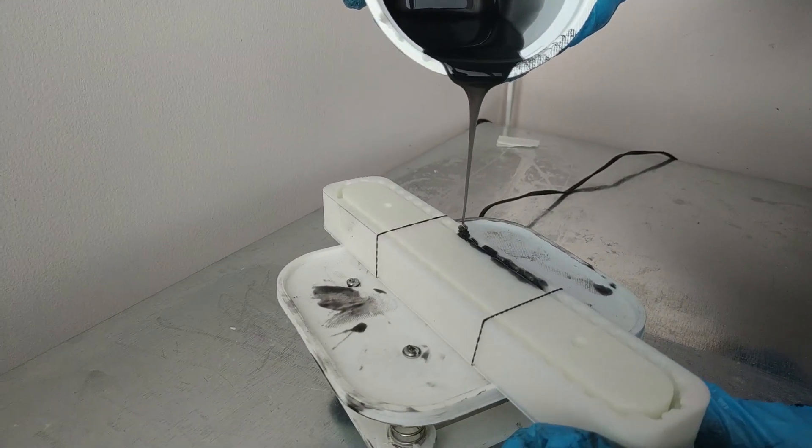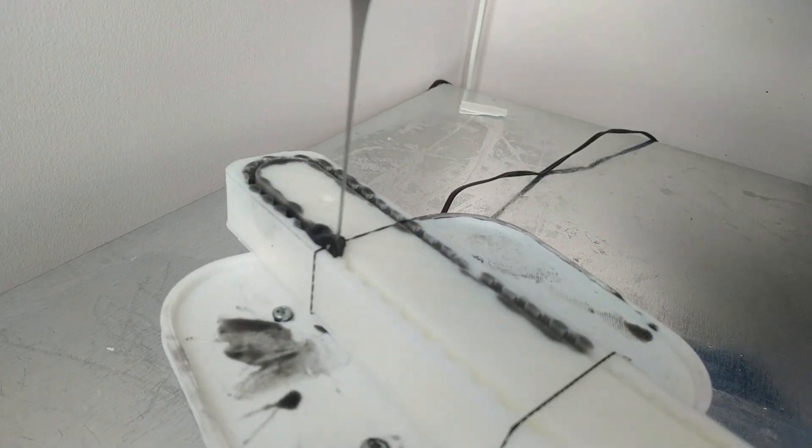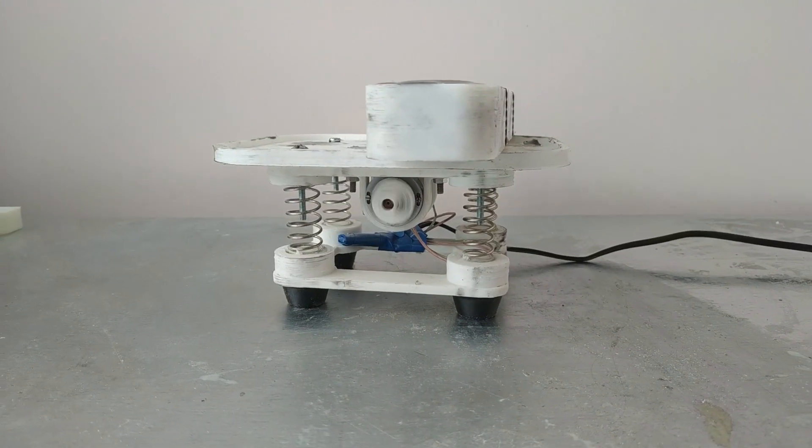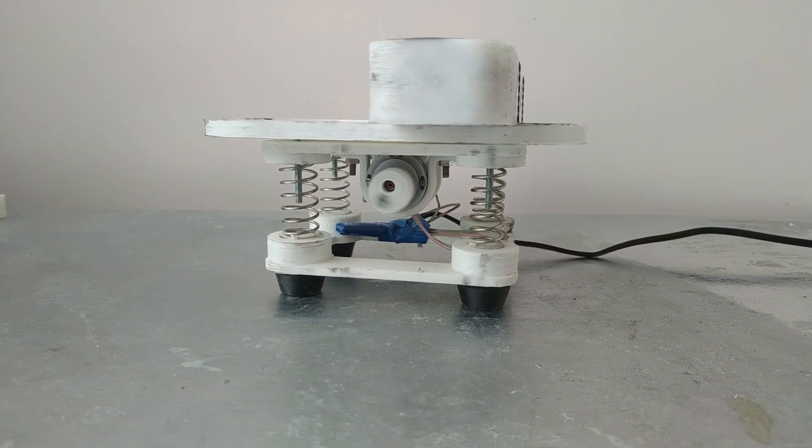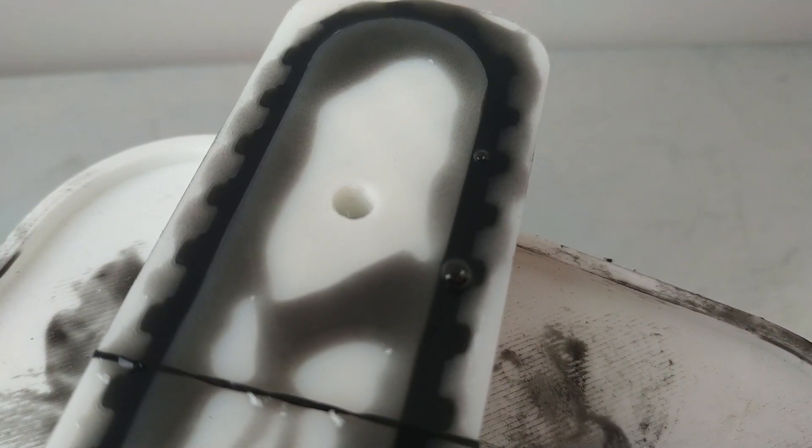After the mold is printed and ready to use, I prepare the two-component silicone. When using silicone, it is important to follow the proportions that are listed in the silicone manufacturer's instructions. I will be using a vibro table; it will keep air bubbles from lingering inside the rubber track. Once I have poured the silicone into the mold, I leave it for 24 hours to cure.